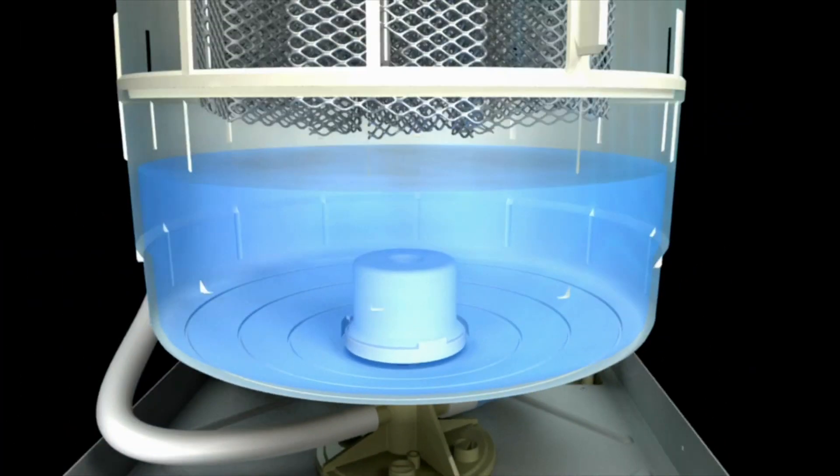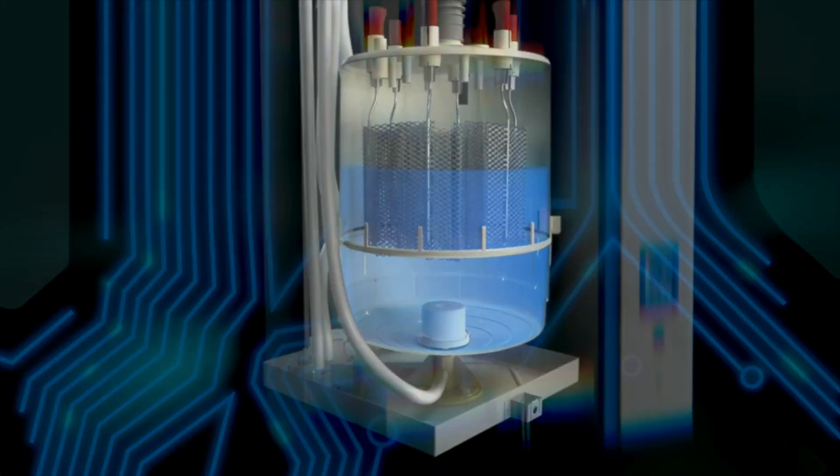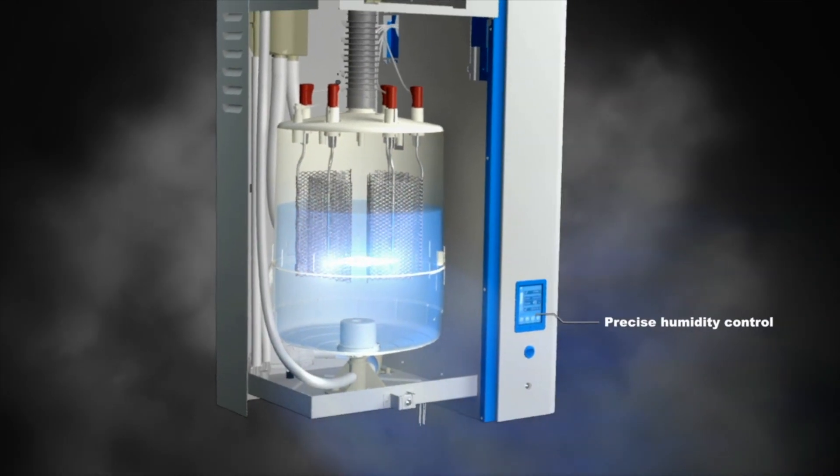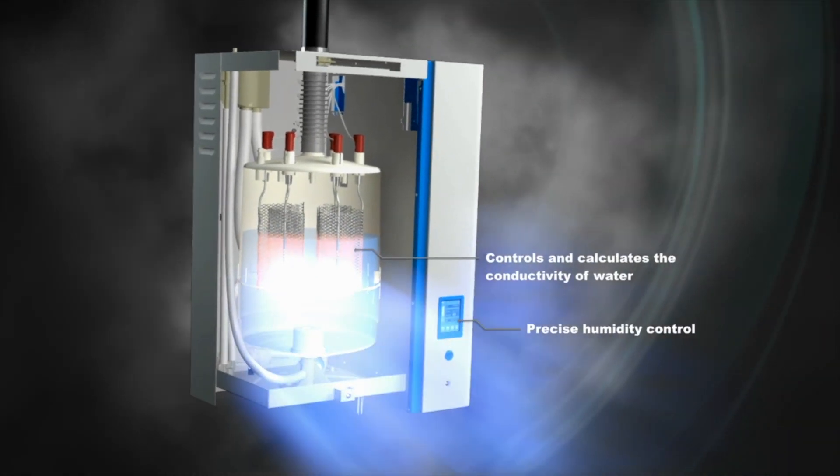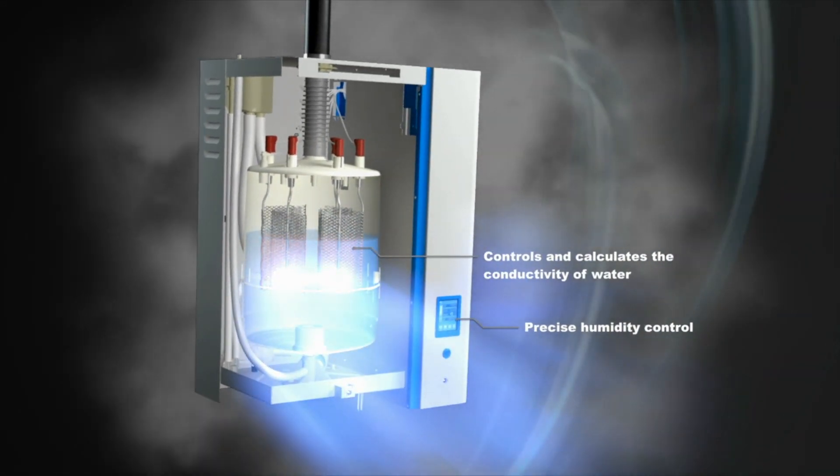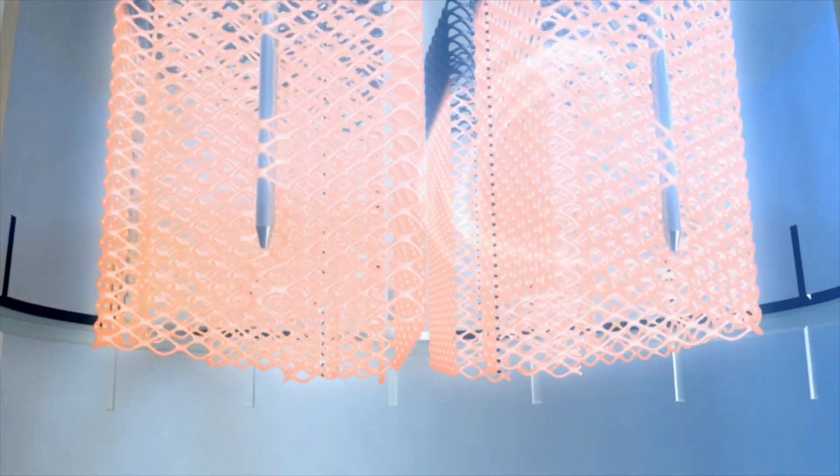Electric current flows through the water according to its conductivity. The controller routinely monitors the water conductivity and regulates steam production by optimizing water feed to the steam cylinder.